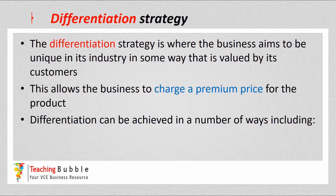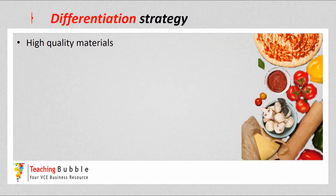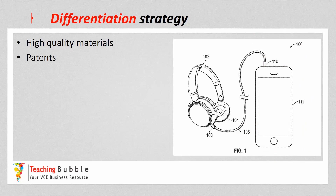Differentiation can be achieved in a number of ways — the business is trying to stand out from competitors and offer something consumers can't get elsewhere. It could be high quality or unique materials that other businesses don't have access to, or aren't using in their particular good or service. It could also be a patent — something unique that no other business can make.